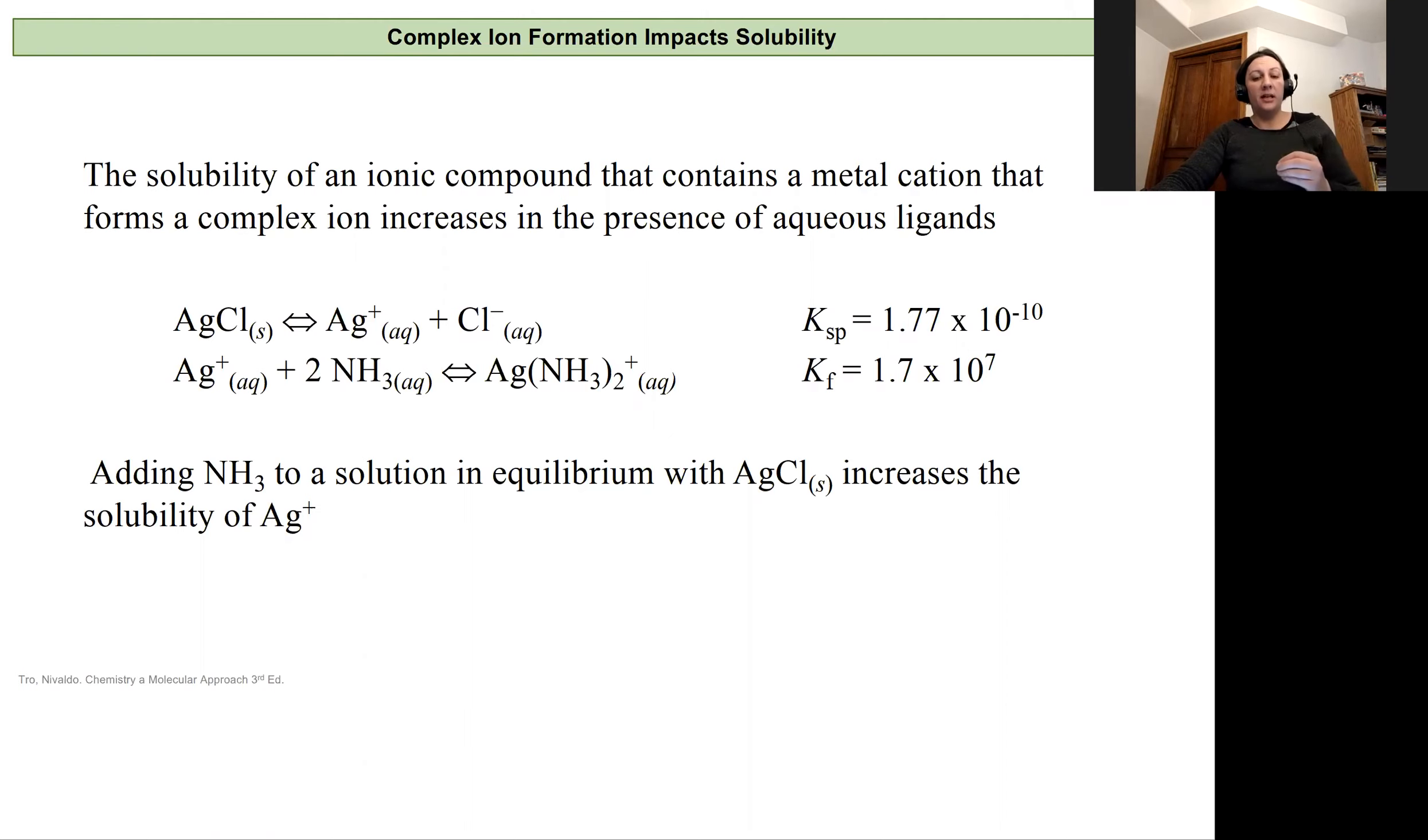The solubility of an ionic compound that contains a metal cation that is capable of forming a complex ion with something else in solution is going to have the effect of forcing that solid to dissolve more as the ions in solution are used to form the complex ion.